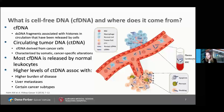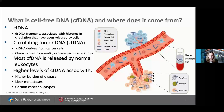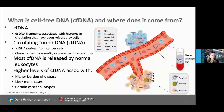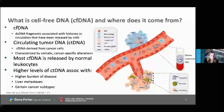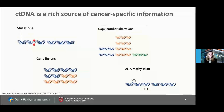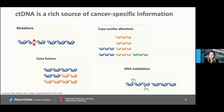In breast cancer specifically, triple-negative breast cancer is a higher-shedding tumor than hormone receptor-positive HER2-negative breast cancer. ctDNA is a rich source of cancer-specific information — we can look at mutations, gene fusions, copy number alterations, particularly amplifications, as well as DNA methylation, all of which can be used to gather information about a patient's cancer.